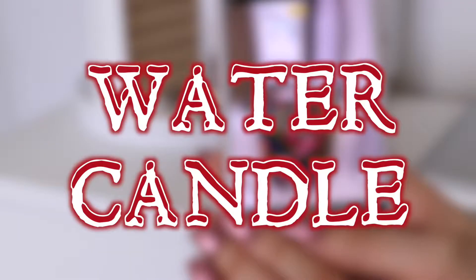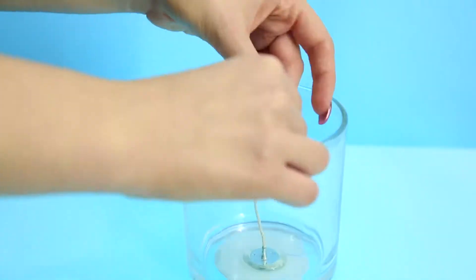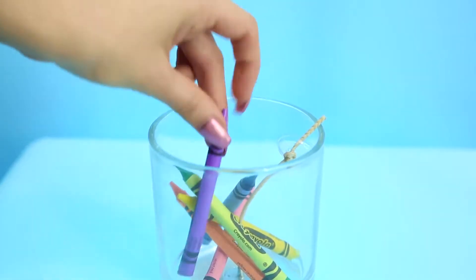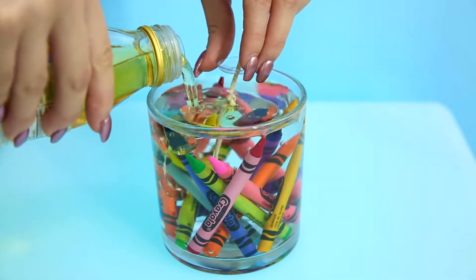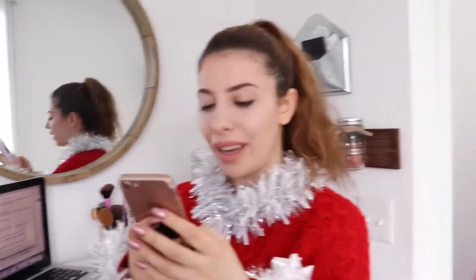Now onto the water candle, and I'll link below the channel that inspired me to make this life hack. So you're going to cut a circle out of plastic, hole punch a hole, and then place it on the wick with a knot, and then place your crayons in, and then your water, and then some oil on top. And then you can light it, and that's it. Can't beat this.